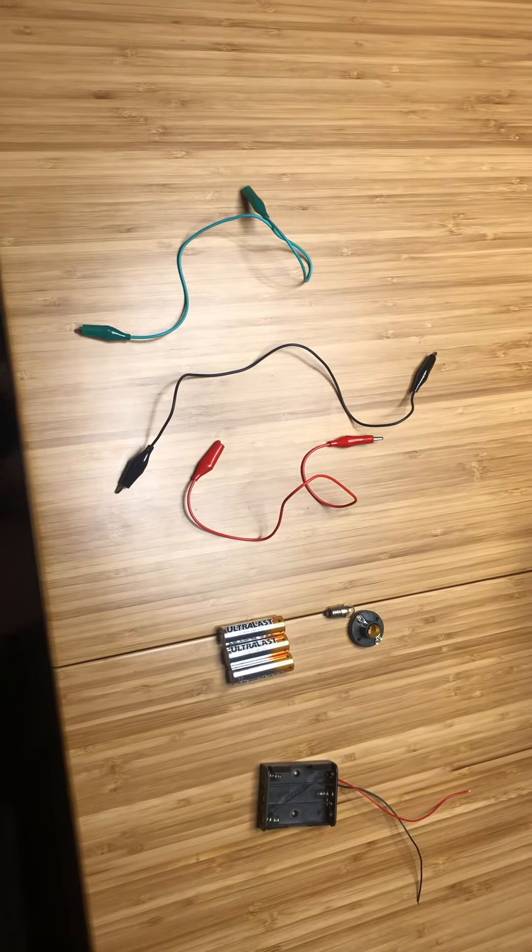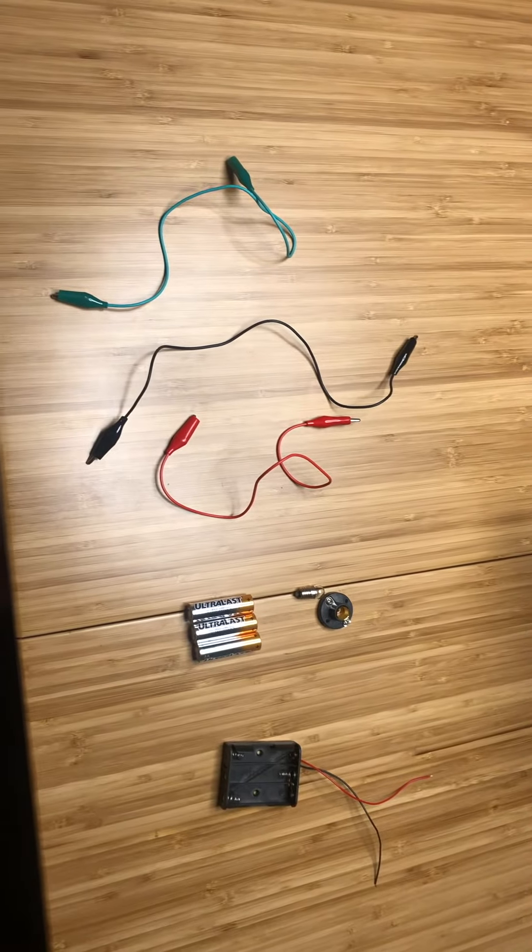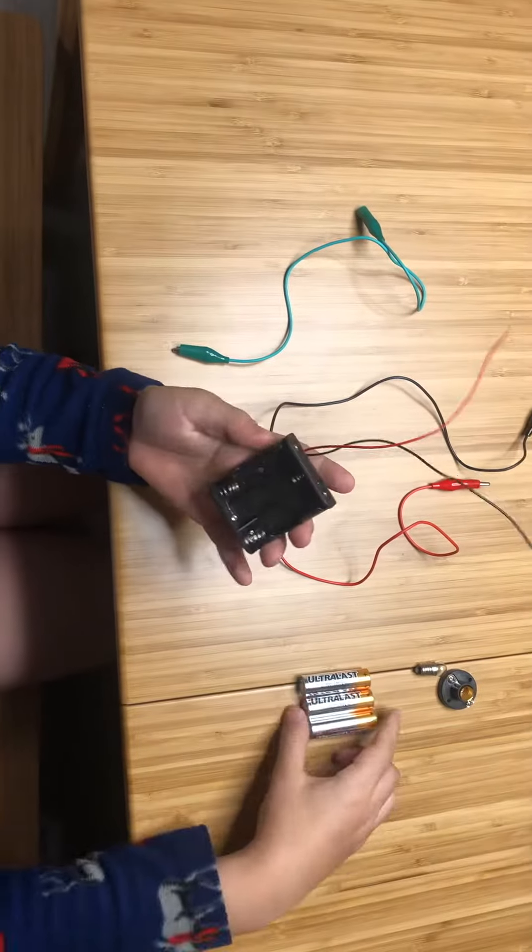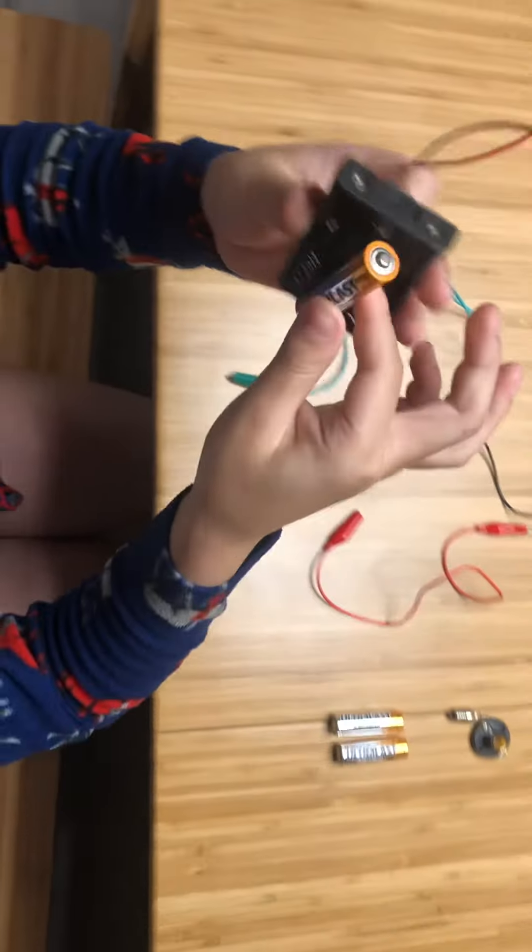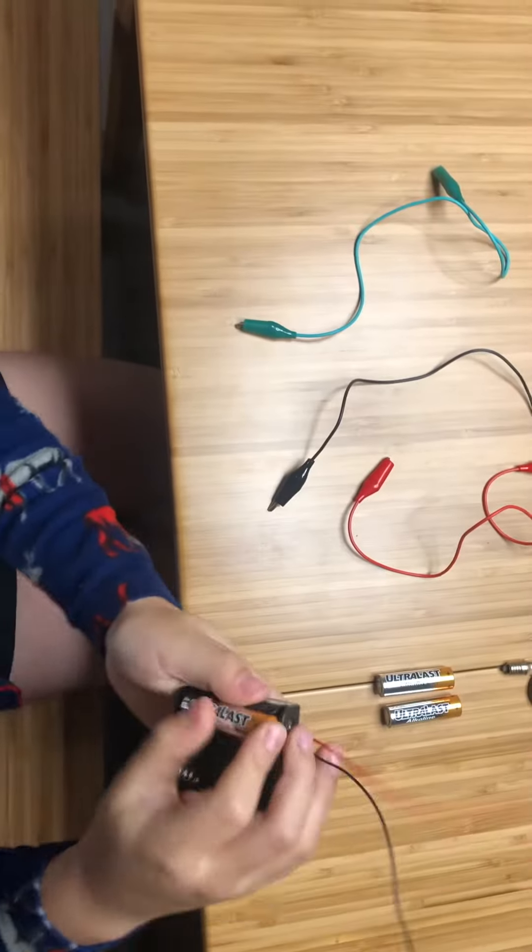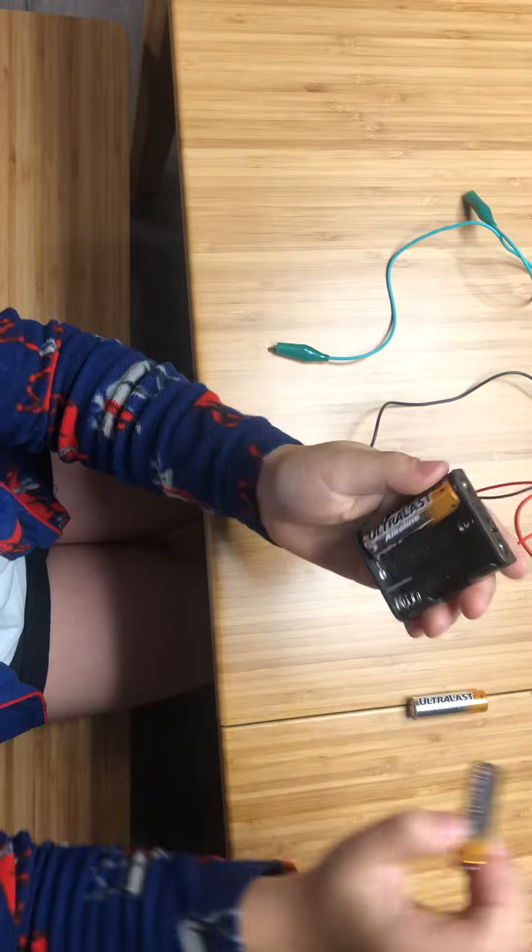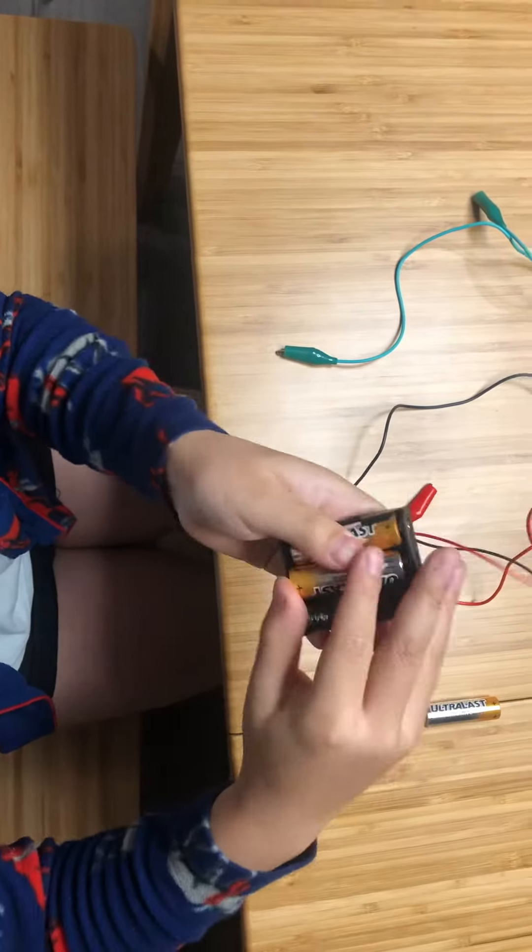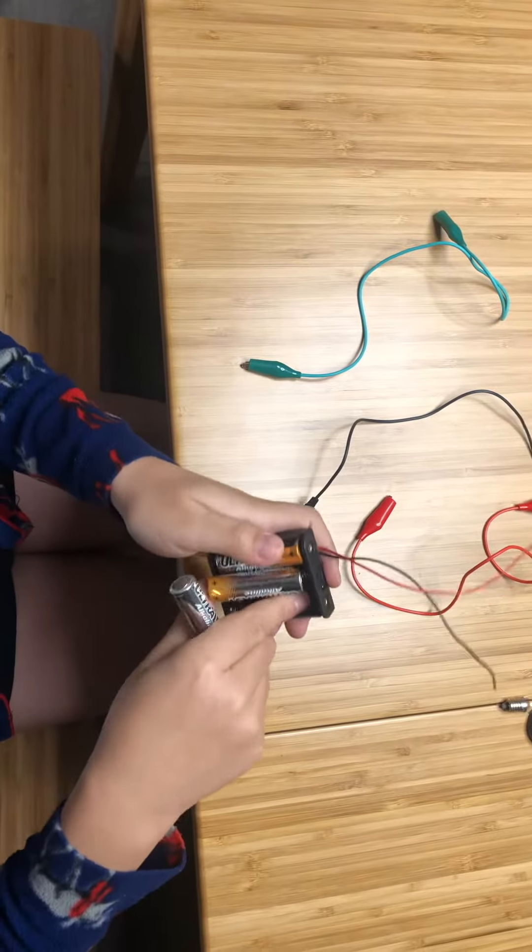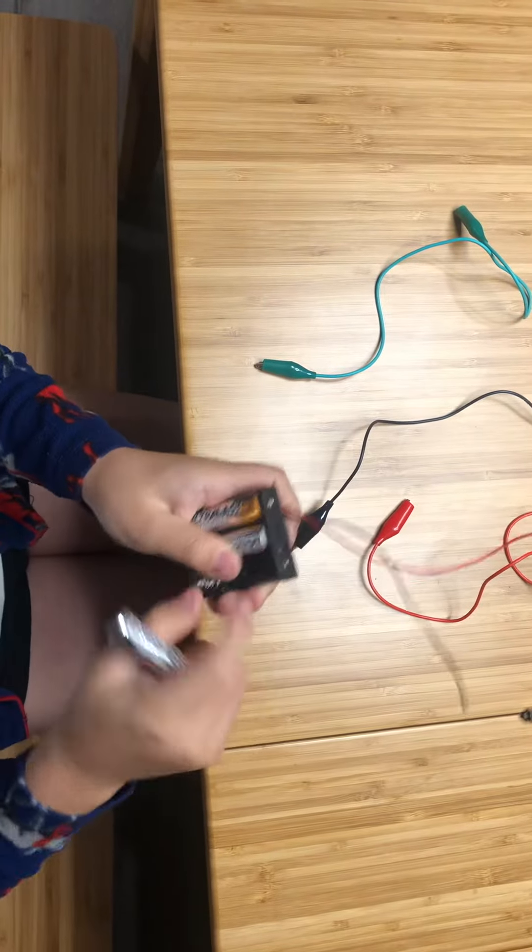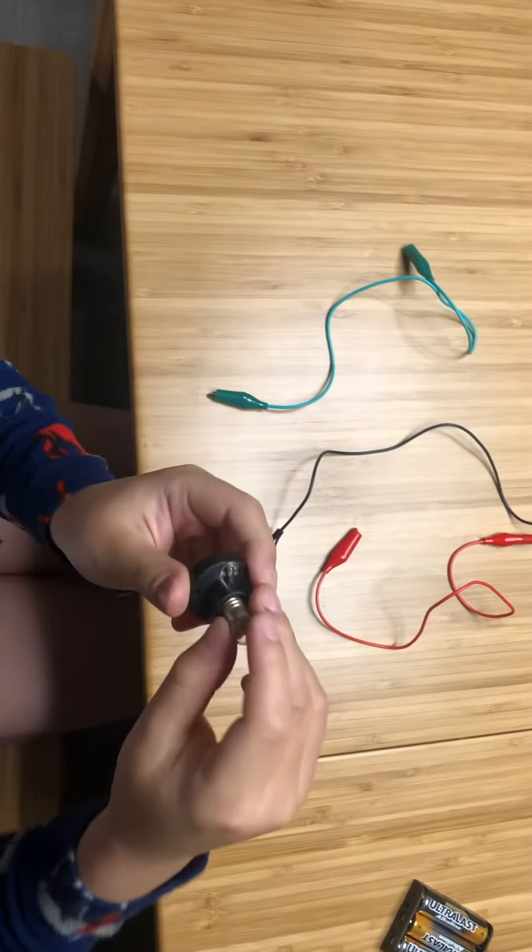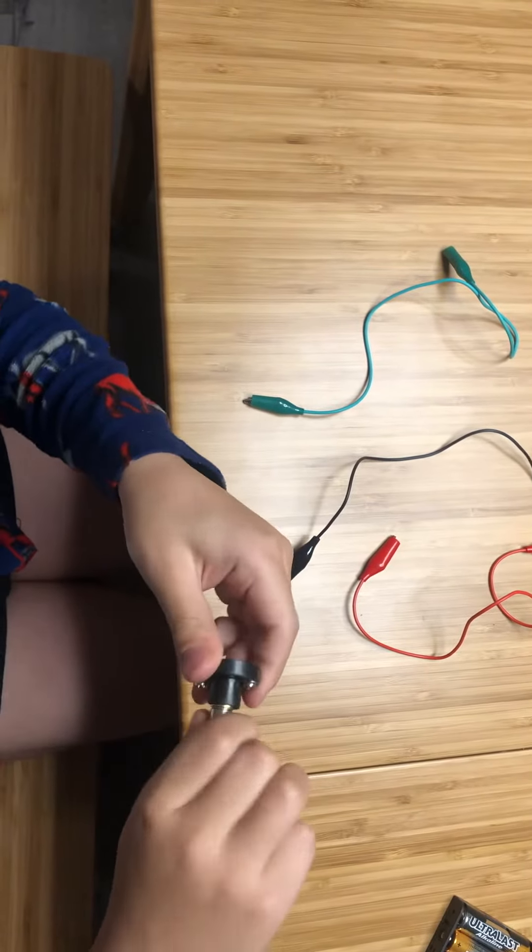Okay, today we're going to set up the pencil resistor kit. First, we're going to take the battery pack and make sure to match up the plus and minus, or else they won't do the battery. Next, screw the light bulb into the light bulb holder.